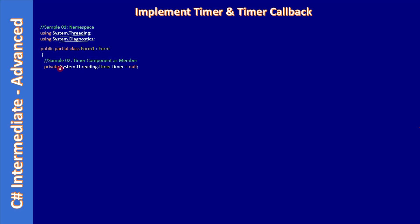At the form level, we declare the timer using the fully qualified name System.Threading.Timer. Even though System.Threading is already included, we keep the fully qualified name because this is a Windows Forms application — the application may get confused between the component-based Timer and the threading Timer class. So we specify System.Threading.Timer explicitly and initially keep it as null. It's a private member.